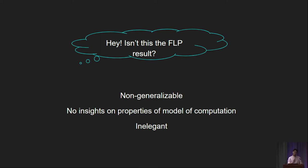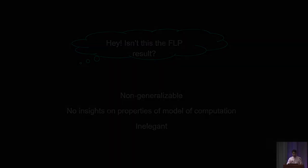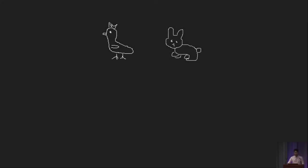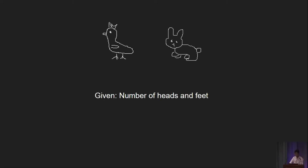Before we dive in to see what this result is about, I want to step back and look at a math problem I encountered in primary school, which will be quite relevant. Back where I'm from, Hong Kong, we have this problem called the Gaitou Muntai, which roughly translates to the chicken-rabbit problem. I think here in the UK or in other places you use slightly different animals, but the general idea is the same. A chicken has one head and two legs, and a rabbit has one head and four legs. We are given the total number of heads and feet in the farm, and we want to deduce the exact numbers of chickens and rabbits.